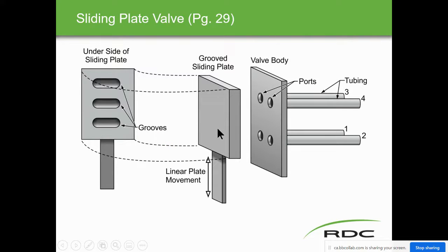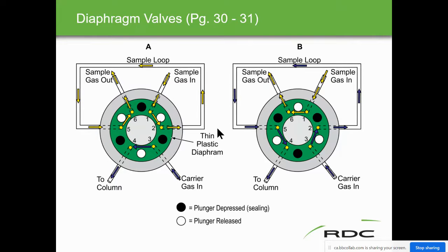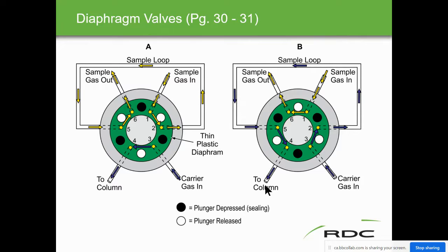Alternative valve types include a sliding plate valve and a diaphragm valve. With the diaphragm valve in position A, sample comes in and goes out; carrier gas always flows. Switching to position B: sample goes to vent while the carrier gas takes all the sample trapped in the sample loop and pushes it to the column. The diaphragm — plunger depressed seals it, plunger released opens it — controls the amount of sample injected by filling the sample loop and pushing it to the column.